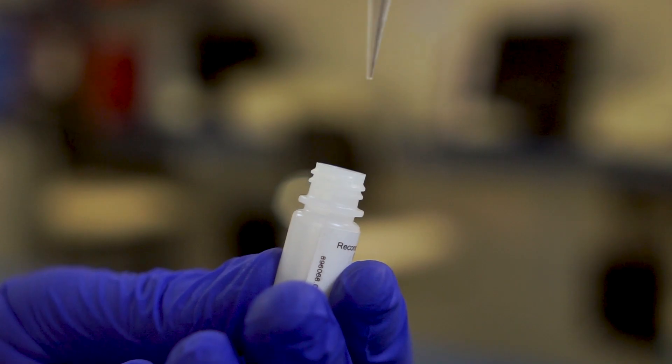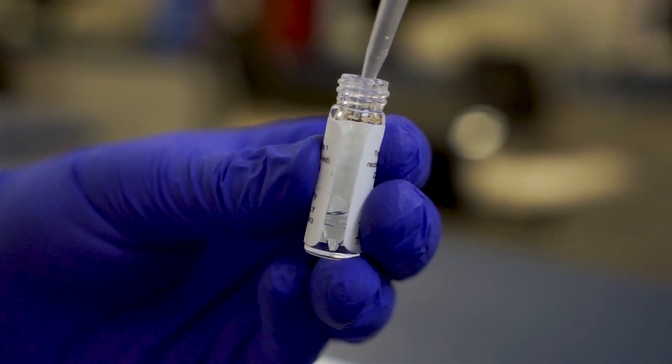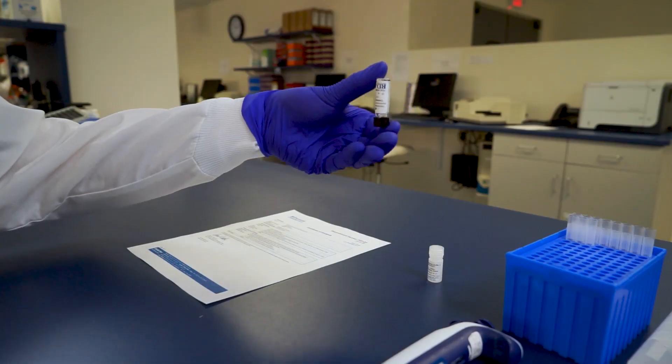Using the volume you calculated using the reconstitution calculator, slowly add the buffer to the vial to achieve the desired concentration.